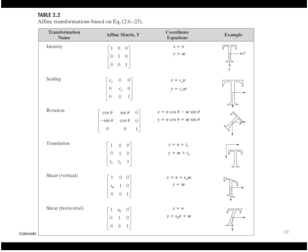This is pretty general. We can perform simple scaling by multiplying v and w by a factor t. We can do a rotation by putting a 2D rotation matrix in the upper 2×2. We can also achieve translations by putting a translation in the lower row, which just adds an offset. And we can do shearing horizontally, vertically, or both. So this is a fairly general type of transform.